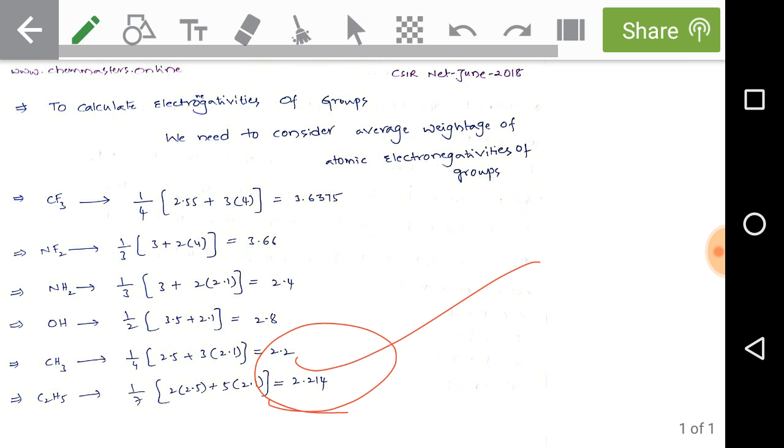That's why option D is also correct: CH3 and C2H5 have nearly same electronegativity values, which is given as a sentence in the problem. Option D is also the correct one. Thank you.